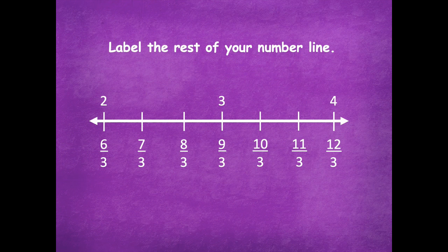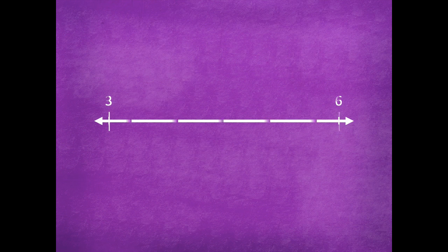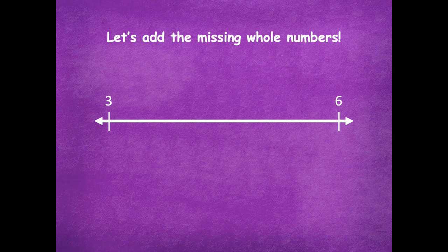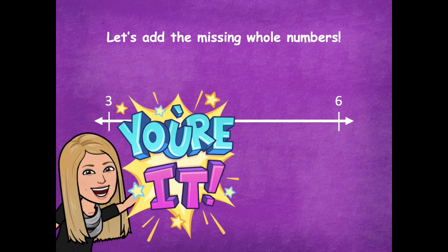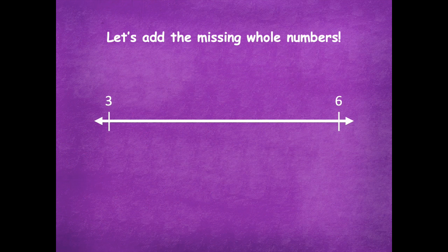Now we're going to label a number line with endpoints of three and six and add the missing whole numbers. Pause the video — three and six are whole numbers, they're not fractions, so what goes in between three and six? Pause the video, write those in, and then click play when you're ready for the next step. The missing whole numbers are four and five, so you should be able to count three, four, five, six to know that your whole numbers are correctly placed on the number line.